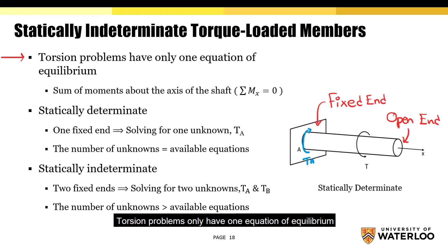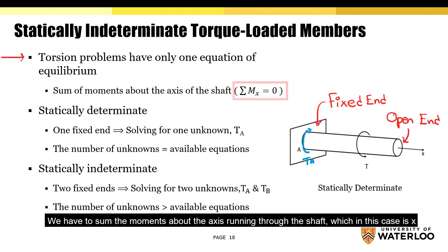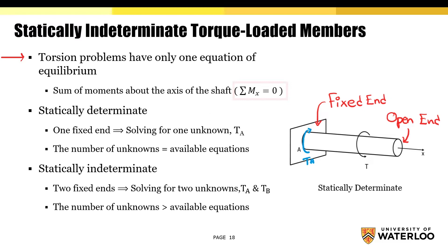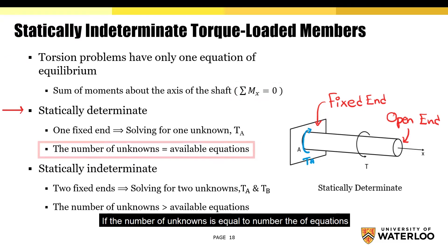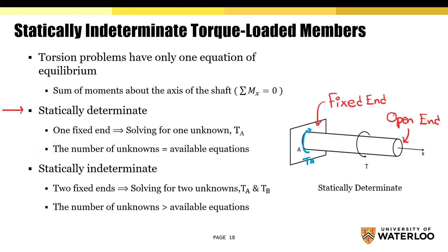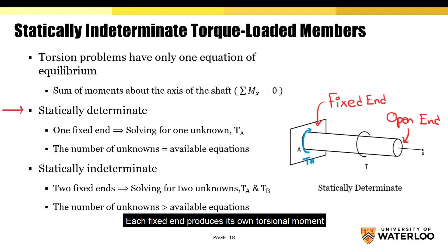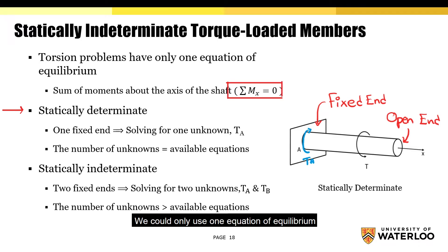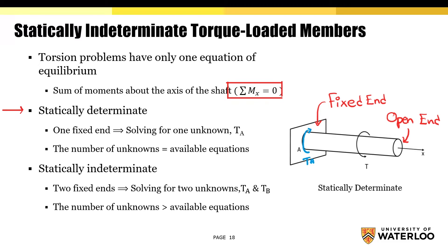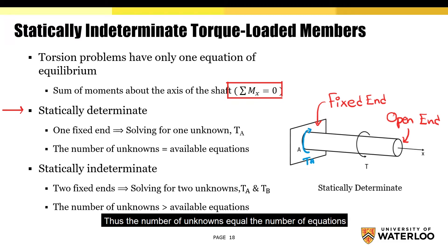Torsion problems only have one equation of equilibrium. Since the only applied loading is the torque, we have to sum the moments about the axis running through the shaft, which in this case is x. The shaft is only considered to be statically determinate if the number of unknowns is equal to the number of equations. Since we only have one fixed end, we'll also only have one unknown. Thus, the number of unknowns equals the number of equations.